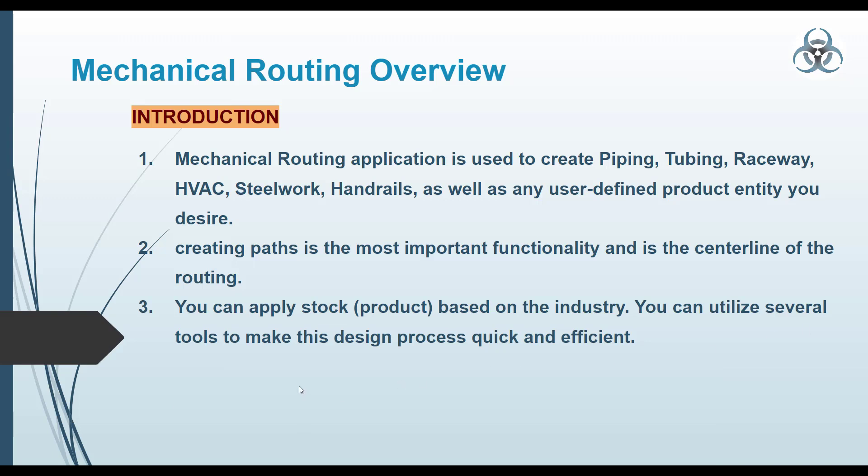I have shared a slide here which will give an introduction. The mechanical routing application is used to create piping, tubing, raceways, HVAC steelworks, and rails. It is not restricted to a particular industry — it is also user-defined. Whenever piping or routing is required in a linear path, you can use this application. Creating a path is the most important functionality and is the centerline of this routing application. You can then apply stock to those paths depending on your industry to produce drawings quickly and efficiently.